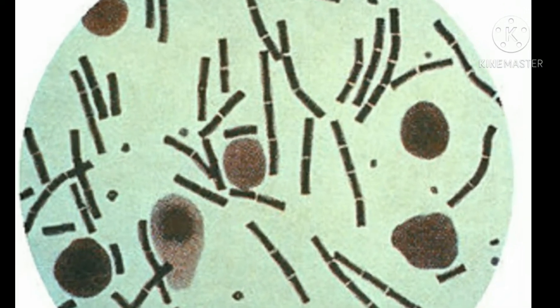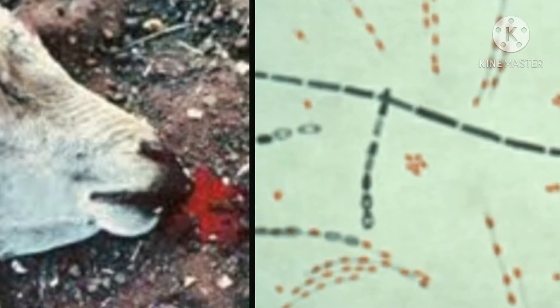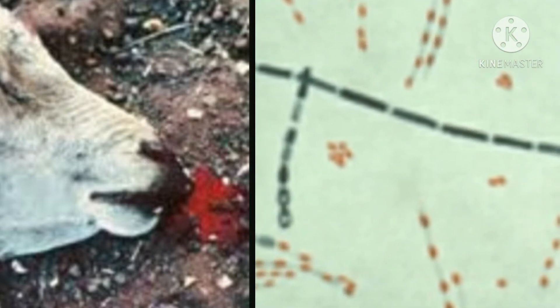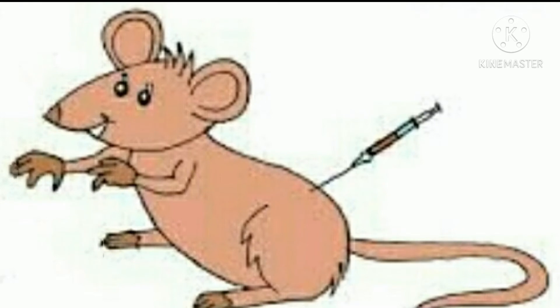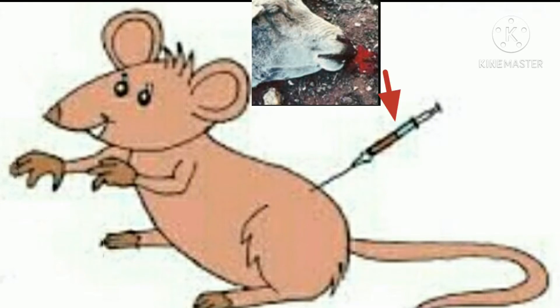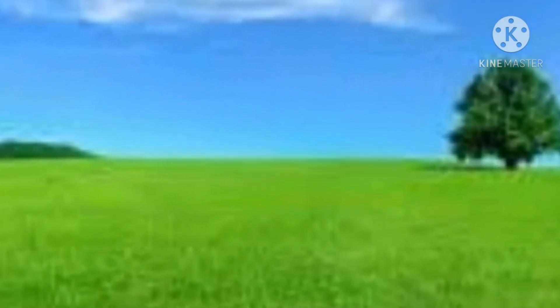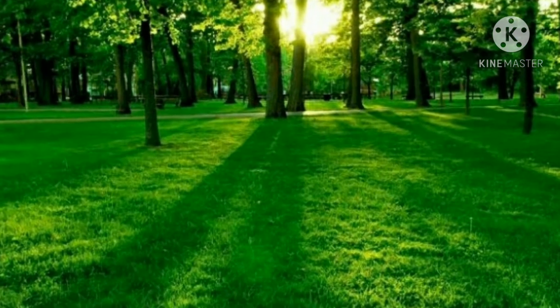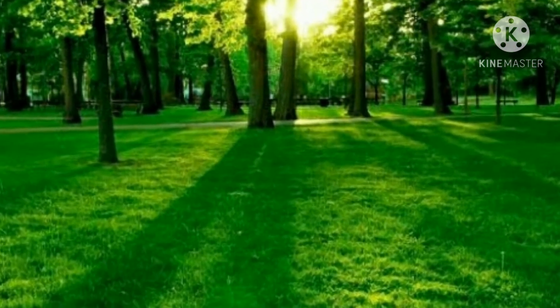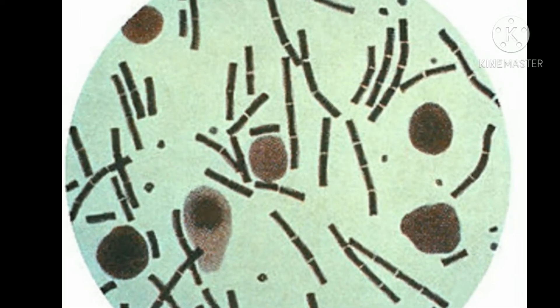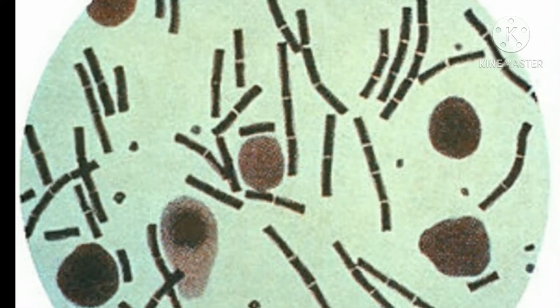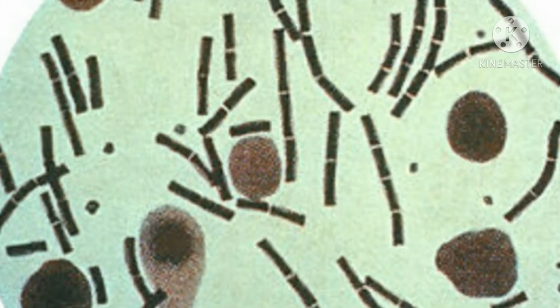Studies had shown that rod-shaped structures were present in the blood of animals that died of anthrax, and that the disease could be transmitted by inoculating healthy animals with blood from diseased animals. Certain pastures were known to be dangerous to grazing livestock and could remain so for years, yet little was known about the rod-shaped structures or about the nature of soil-derived diseases.